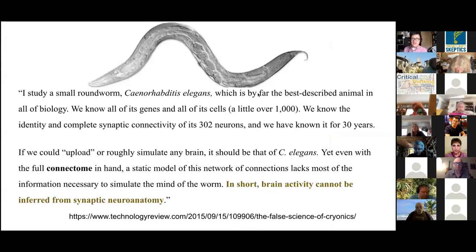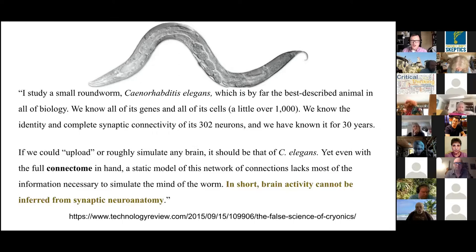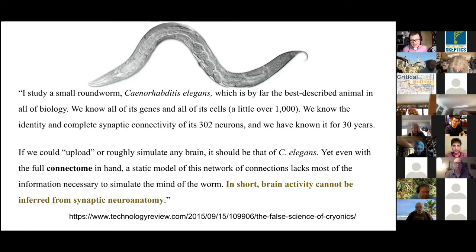What's really convinced me this is somewhat implausible: the roundworm C. elegans — maybe second only to the fruit fly as the most studied model species. We know essentially everything about its brain and how it works. Yet scientists report that even with all of that knowledge, there's no way to fully simulate one computationally. The key takeaway: brain activity cannot be inferred from synaptic neuroanatomy alone. A snapshot of the brain is incomplete. You would really need to thaw out that brain — there's no copy process. You are hedging entirely on innovation that has not yet come to pass.